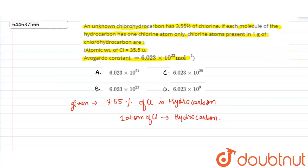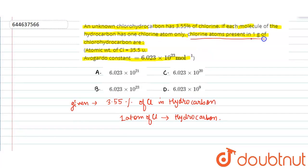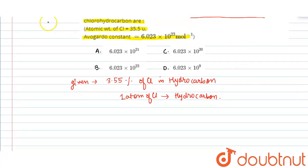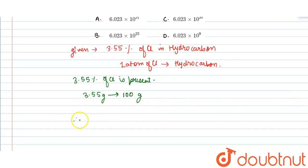And we have to find chlorine atoms present in one gram of chloro-hydrocarbon. Now we can find this. We have been given that 3.55% of chlorine is present. So if 3.55 grams is present in 100 grams, we have to find for 1 gram.